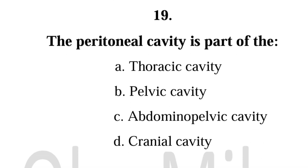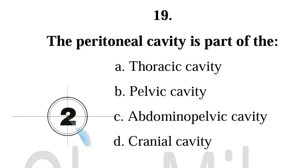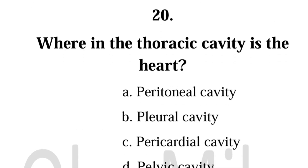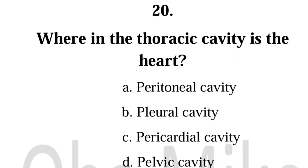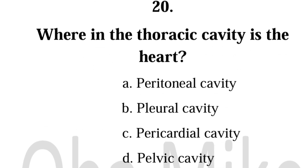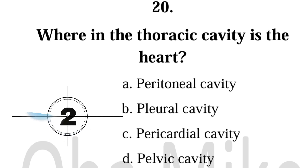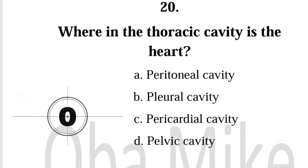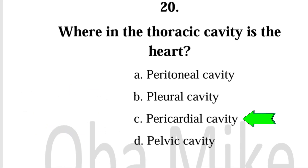Number 19. The peritoneal cavity is part of the: Abdominal pelvic cavity. Number 20. Where in the thoracic cavity is the heart? Pericardial cavity.